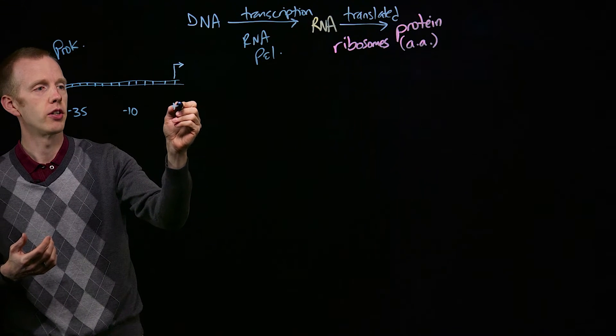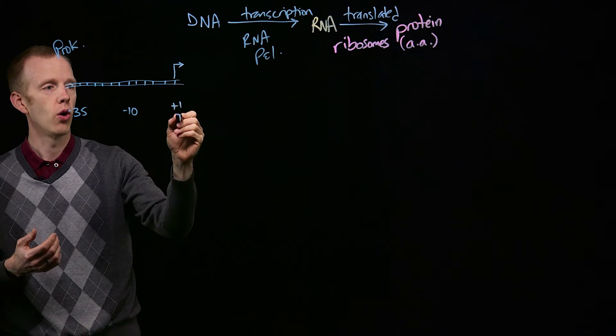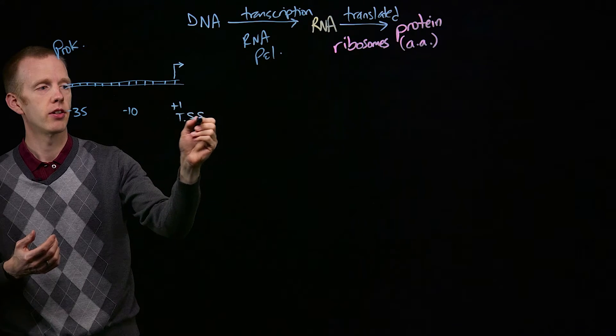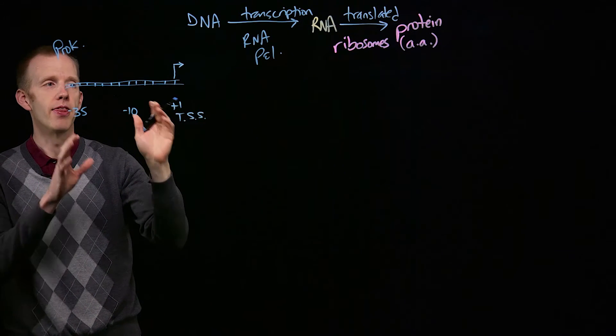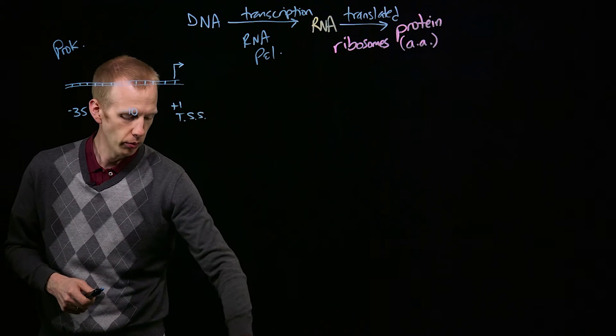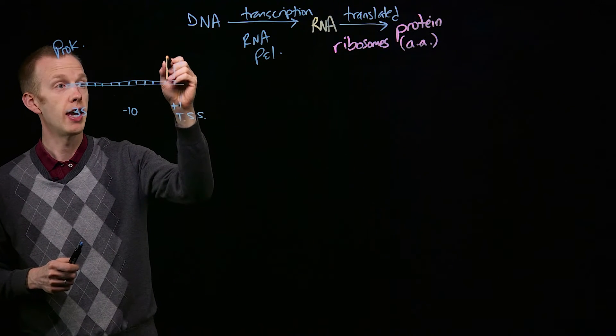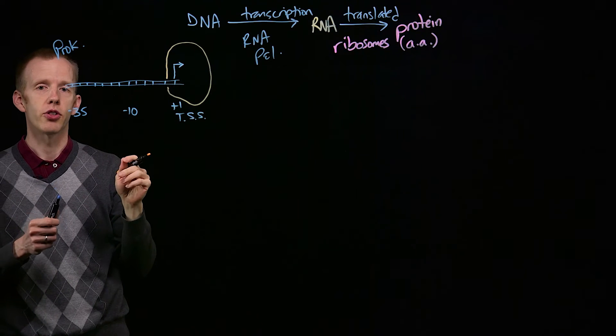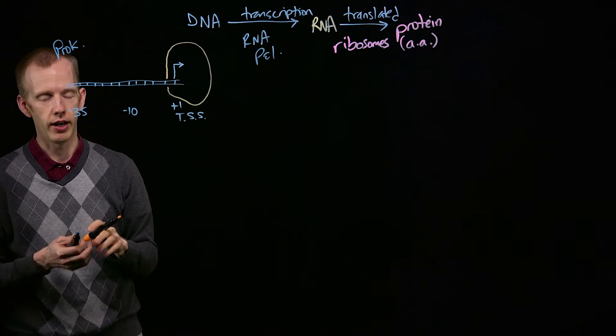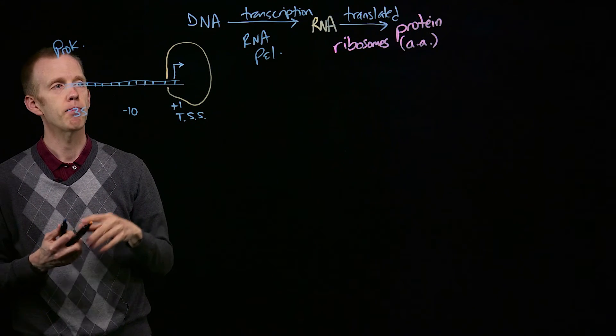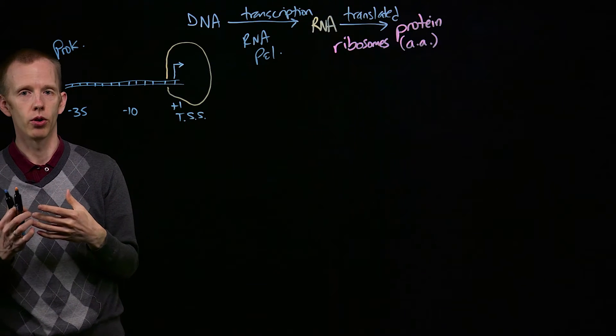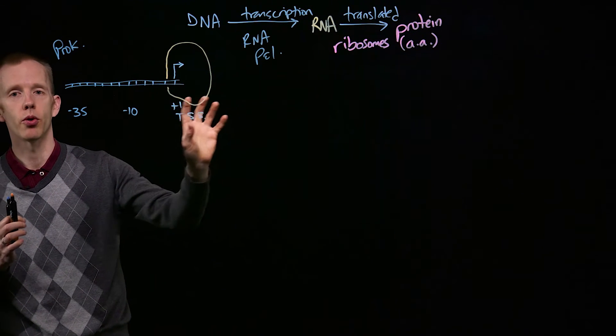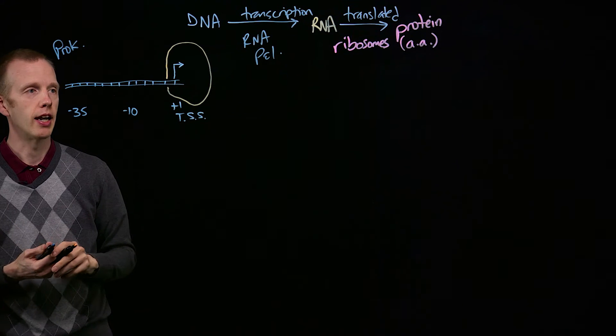That is the position that's called plus one, or the TSS, the transcription start site. That is where RNA polymerase, the enzyme, is going to bind the DNA molecule and start reading one of the strands, the template strand of DNA, and producing an RNA molecule as RNA polymerase is going to move down the DNA template.